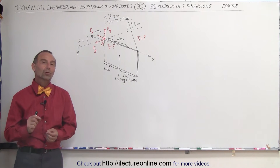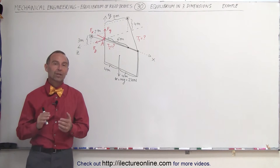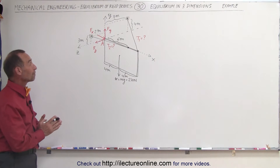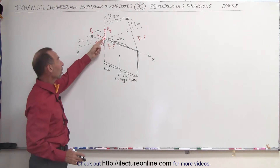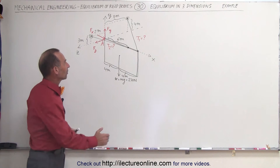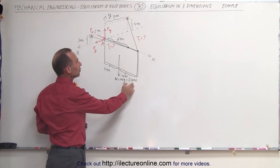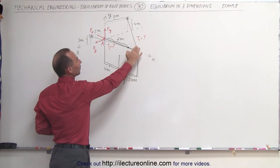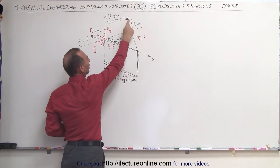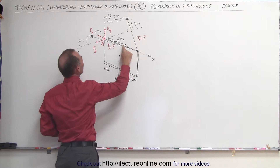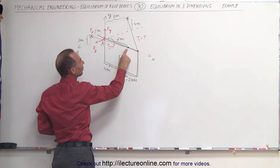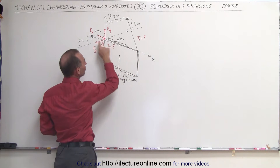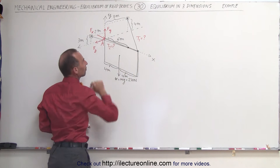Welcome to Electron Online. We're going to do an example of a three-dimensional equilibrium problem. Here we have a sign hanging from a wall at point A. The sign has a weight of 270 newtons and is eight meters long. It is also being held up by two cables, cable one and cable two. Cable one is attached at the very end of the sign, and cable two is attached at a point six meters away from the wall.